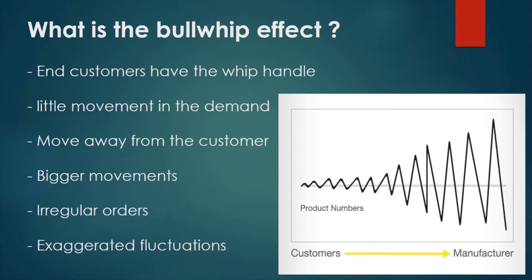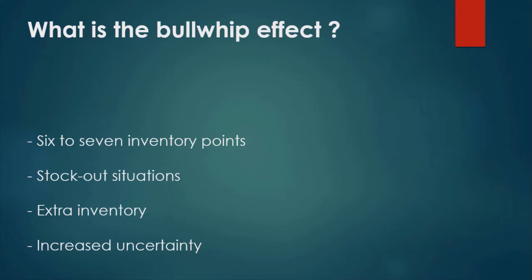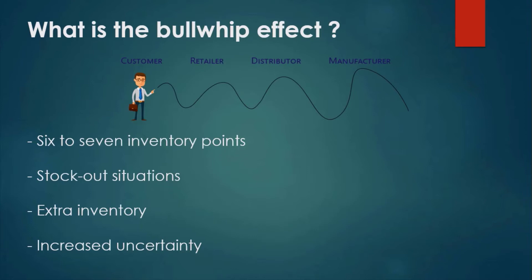The variance can interrupt the smoothness of the supply chain process, as each link will over- or underestimate product demand, resulting in more fluctuations. On average, there are 6–7 inventory points between the end customer and raw material supplier — customer, retailer, distributor, and manufacturer — everyone tries to protect themselves from stock-out situations by keeping extra inventory. Huge buffers of inventories up to 6 months can exist between the end customer and raw material supplier, ultimately causing upstream manufacturers to have increased uncertainty, lower forecast accuracy, and higher inventory levels.